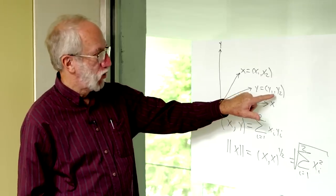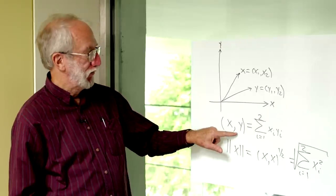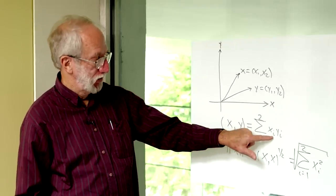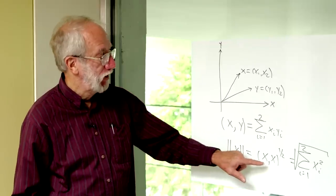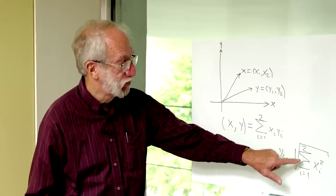Another vector, y, has coordinates y1, y2. We can define the dot product in this way, and we can define the length of the vector, sometimes called the norm, by this way, which is the sum of the squares of the coordinates.